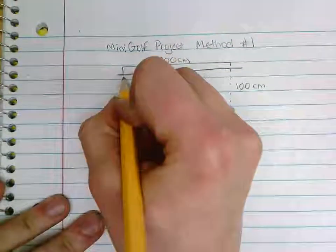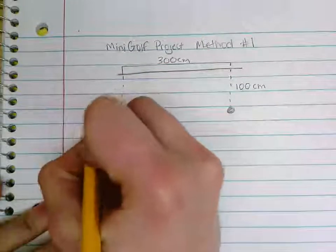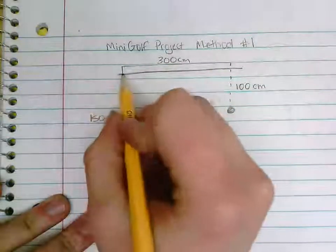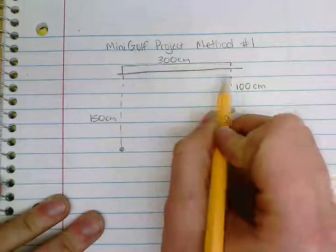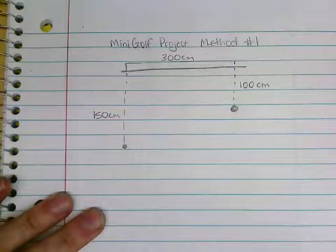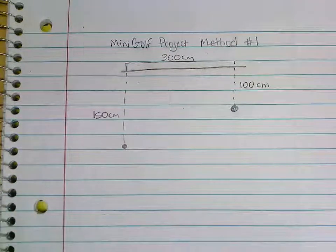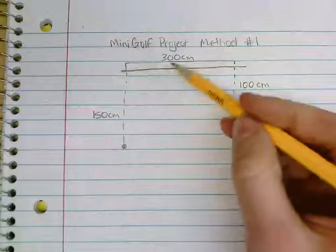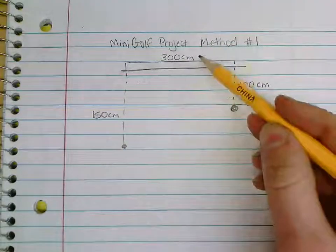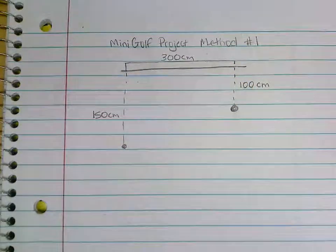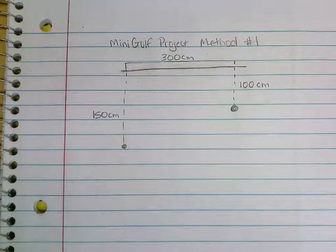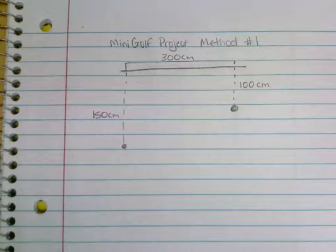So this measurement here is 150 centimeters and the total measurement here horizontally is 300 centimeters. Right now, the question I'm trying to figure out is where do I need to hit the ball against the wall to make it bounce off using the same angle. And so that's the part that we're going to try to explore.